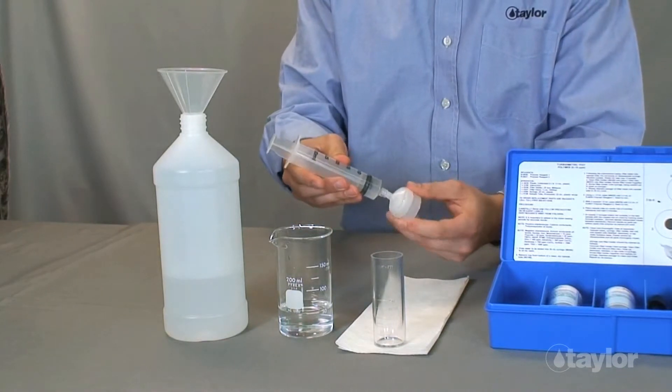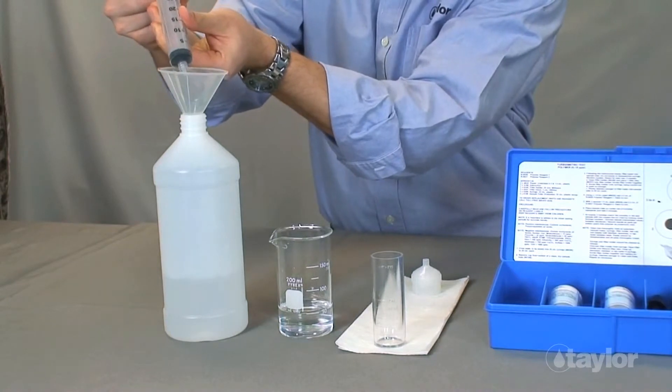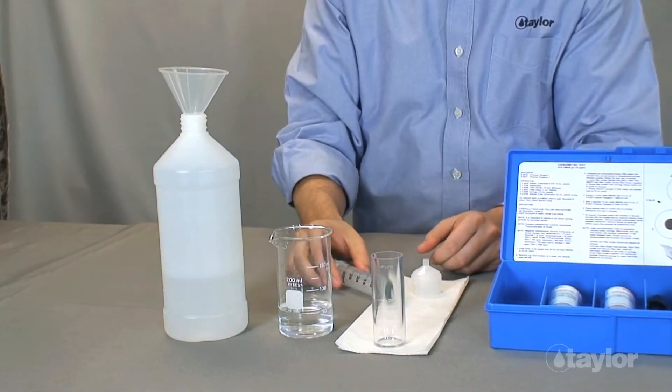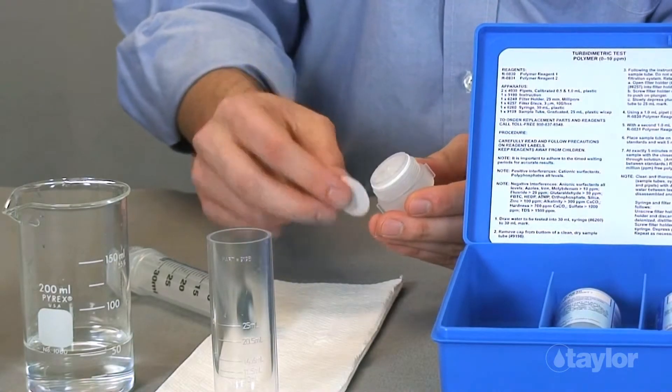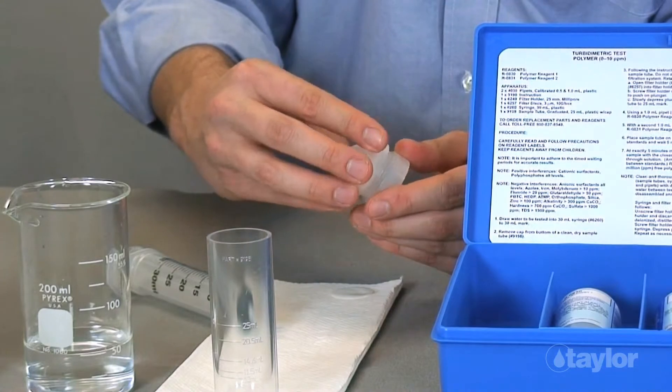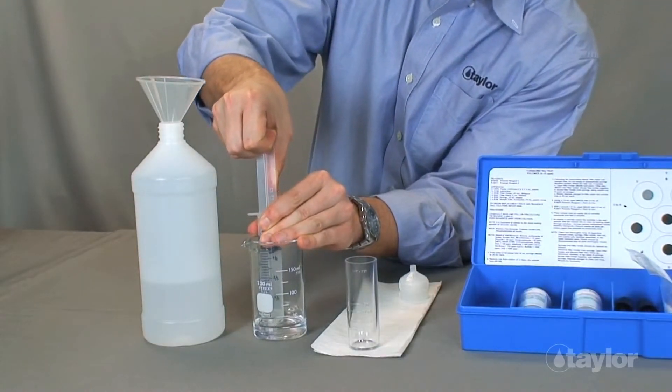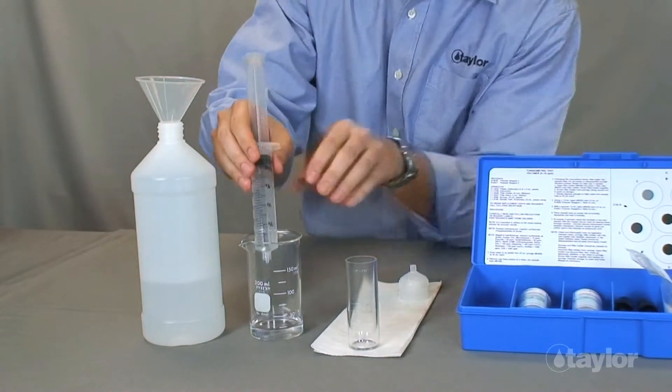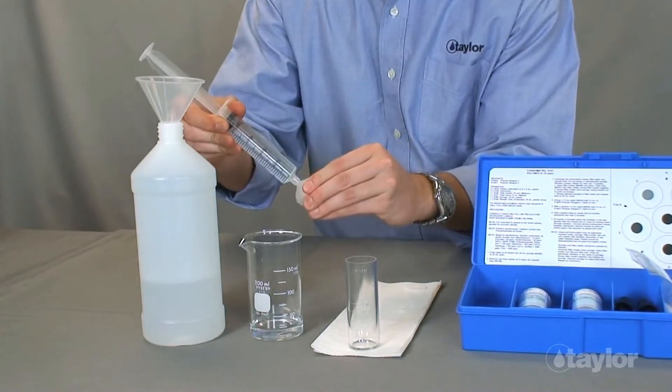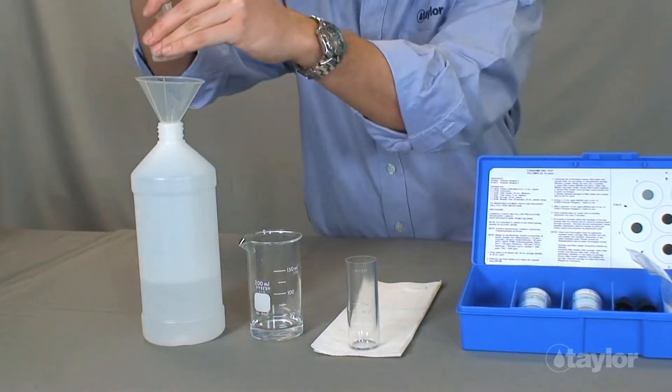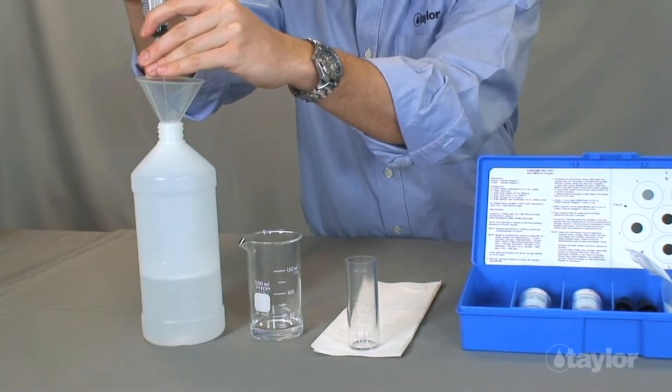To clean the syringe filtration system, unscrew the filter holder. Open the filter holder and remove and discard the used filter disk. Close the filter holder. Draw up deionized, distilled, or tap water, and reattach it to the syringe, then depress the plunger to expel the contents. Repeat as necessary for thorough cleaning.